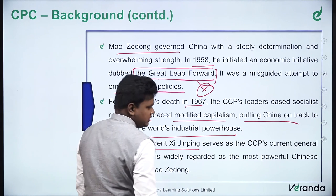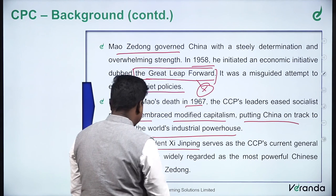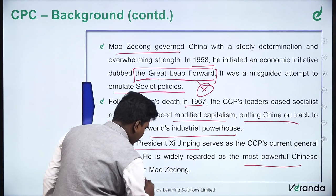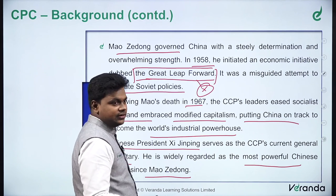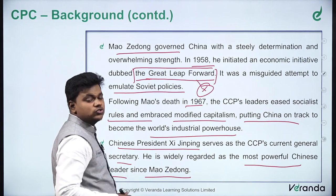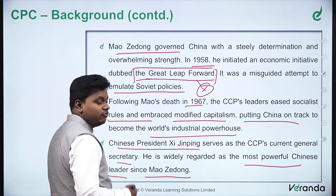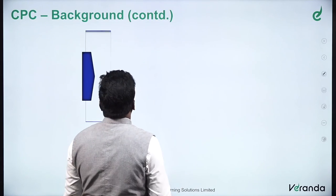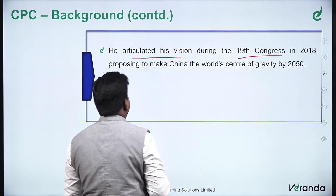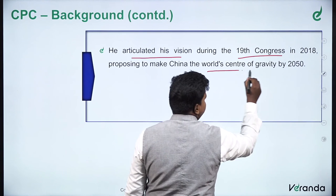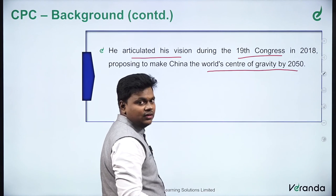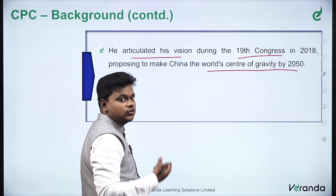Chinese President Xi Jinping serves as the CCP's current general secretary and is widely regarded as the most powerful Chinese leader since Mao Zedong. He articulated his vision during the 19th Party Congress in 2018, proposing to make China the world's center of gravity by 2050. That was his ambitious project of making China the world's center of gravity by the year 2050.